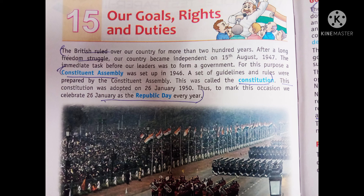For this purpose, a constituent assembly was set up in 1946. A set of guidelines and rules were prepared by the constituent assembly. This was called the constitution. So, what is constitution? Constitution is nothing but a set of guidelines and rules for the country.